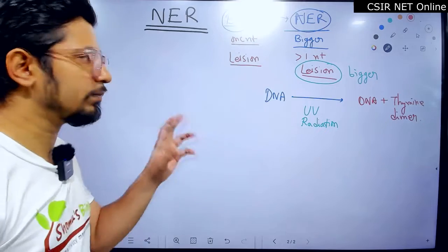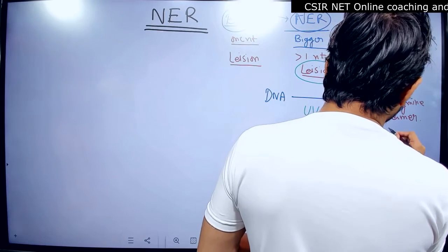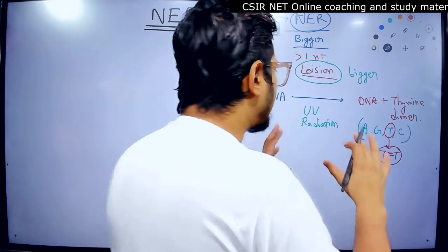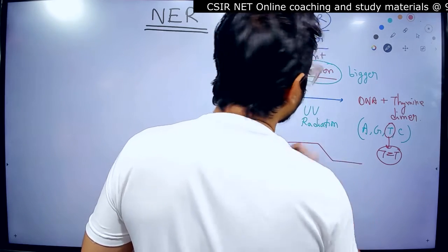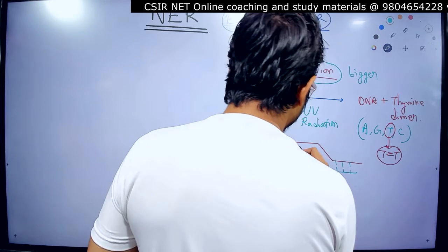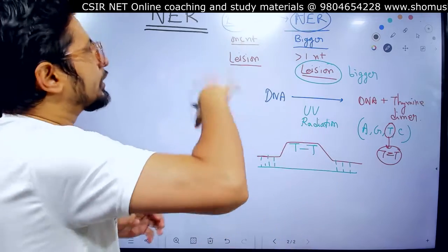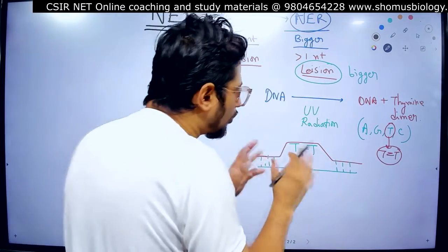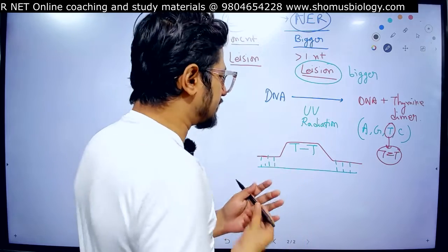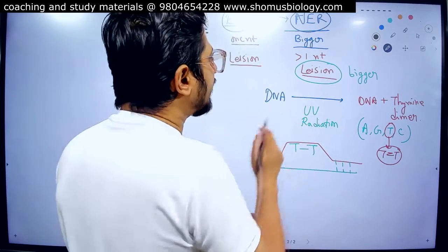When a thymine dimer structure forms in the DNA — remember, DNA has the four bases A, G, T, and C — UV radiation targets the DNA and creates a dimer of thymine. Due to the formation of this thymine dimer, a lesion-like structure is formed in the DNA. This thymine dimer structure is a prime example where Nucleotide Excision Repair is required to fix it, because this is no longer a problem with only a single base, but involves more than two nucleotides.